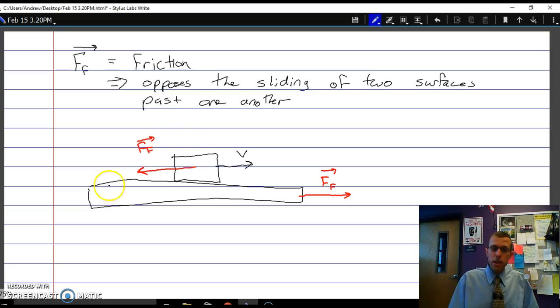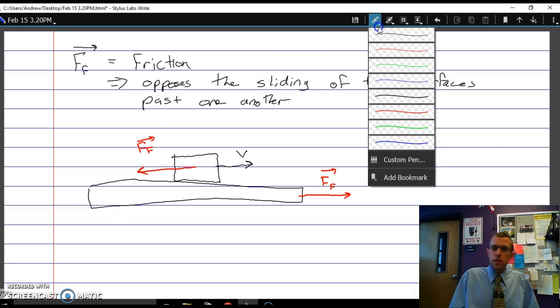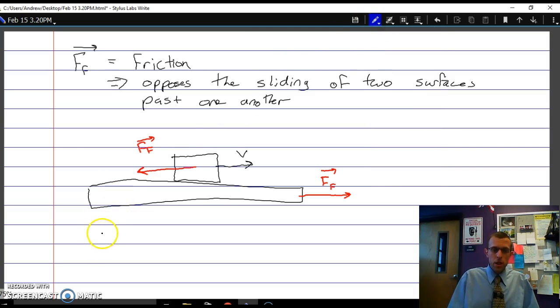Now the magnitude of that force is going to depend on two factors. It'll depend on the roughness of the surfaces, and that's described in a value that we label mu, called the coefficient of friction.